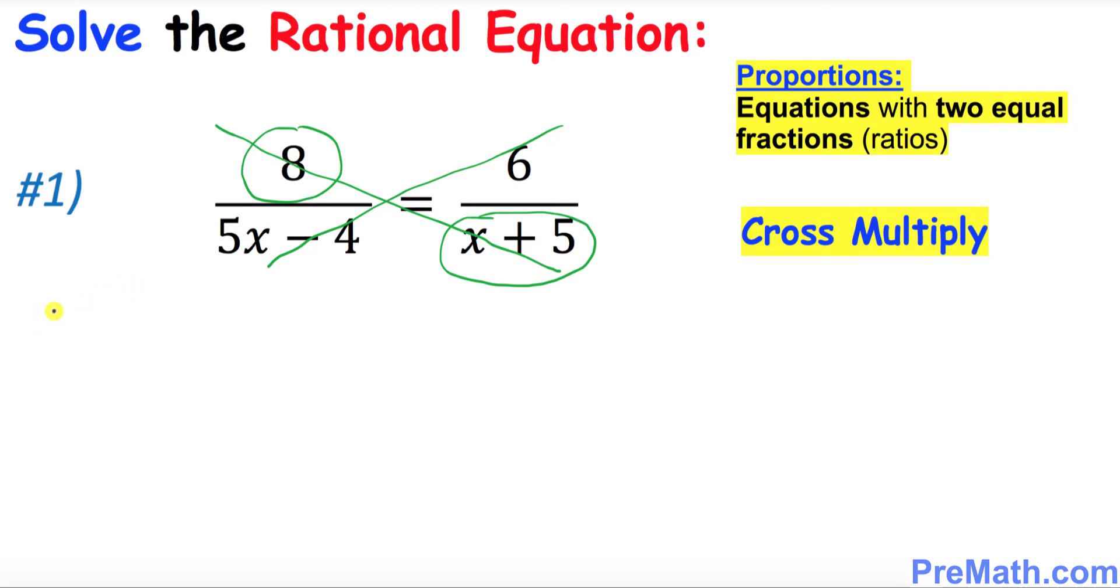Let's multiply this one with this term. So 8 times x plus 5, and then write an equal sign, then multiply this 6 times 5x minus 4. Let's distribute: this becomes 8x plus 40 equals to, and likewise distributing this one, 6 times 5 is 30x minus 24.